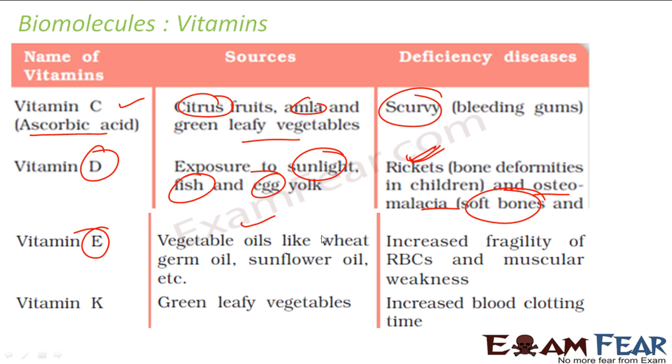Vitamin E is found in vegetable oils, wheat germ oil, sunflower oil. If you don't take this, it increases the fragility of RBCs and muscular weakness.